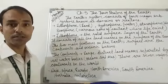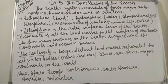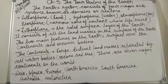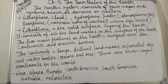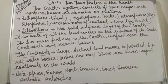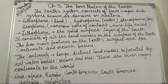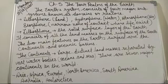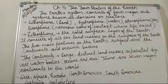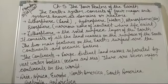Now let's talk about the continents. Continents are the large, distinct land masses separated by vast water bodies — these are the oceans and seas. There are seven major continents in the world: Asia, Africa, Europe, North America, South America, Australia, and Antarctica.